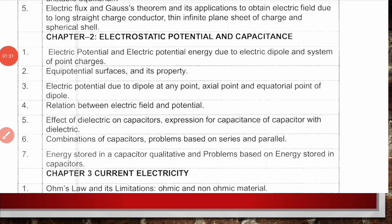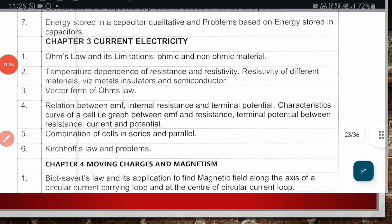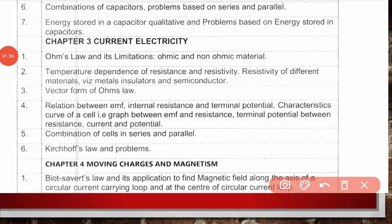Chapter 3, Current and Electricity: Ohm's law and its limitations for ohmic and non-ohmic materials, temperature dependence of resistance and resistivity for different materials like metals, insulators and semiconductors, vector form of Ohm's law, relationship between EMF, internal resistance and terminal potential with characteristic curve of a cell showing graphs between EMF and resistance, terminal potential between resistance, current and potential, combination of cells in series and parallel, and Kirchhoff's laws with problems.